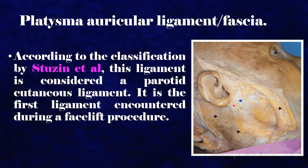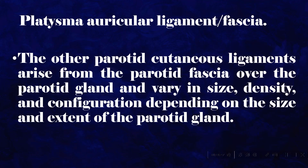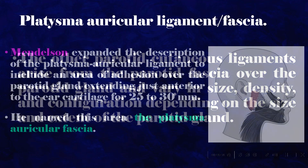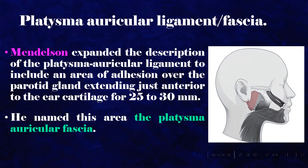According to the classification by Stuzan et al., this ligament is considered a parotid cutaneous ligament and is the first ligament encountered during a facelift procedure. The other parotid cutaneous ligaments arise from the parotid fascia over the parotid gland and vary in size, density, and configuration depending on the size and extent of the parotid gland. Mendelssohn expanded the description of the platysma auricular ligament to include an area of adhesion over the parotid gland extending just anterior to the ear cartilage for 25 to 30 mm, naming this area the platysma auricular fascia.